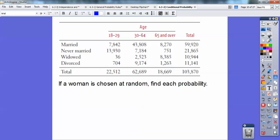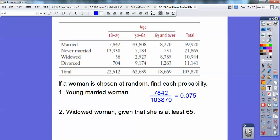If a woman is chosen at random, find each probability that she is a young married woman. So a young married woman, given these statistics right here, that would be young married woman, so this number divided by the total over here. We get 0.075.